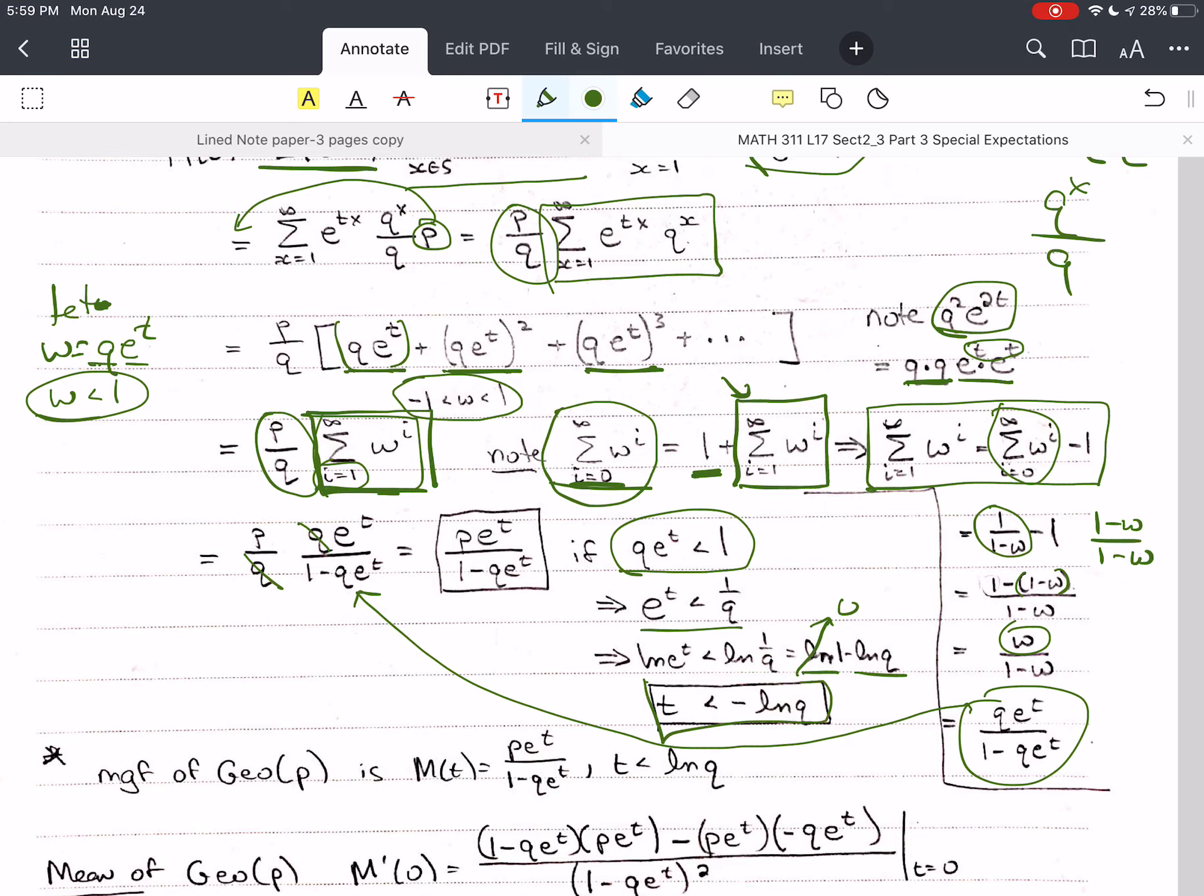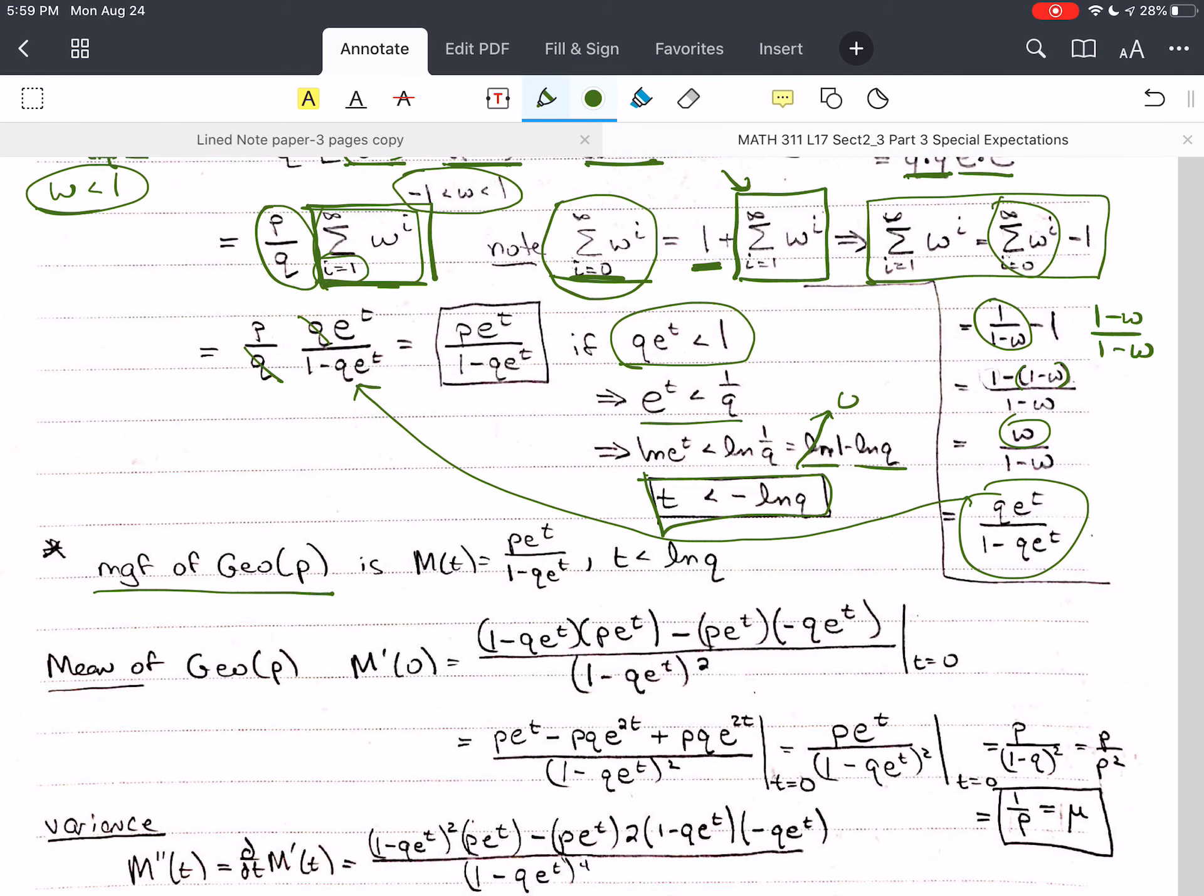So, t is less than negative log q. We have just derived the MGF of the geometric distribution. The MGF of the geometric distribution is this whole thing. Without this, you don't have it. This is where it converges. So, it's where t is less than the natural log of q. p e to the t divided by 1 minus q e to the t.